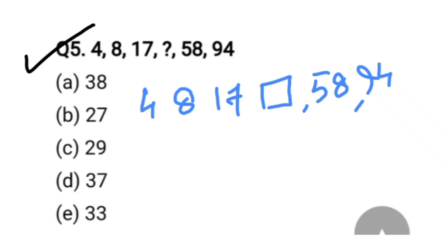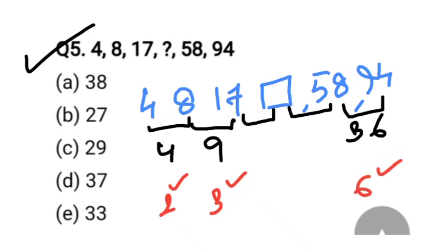Here 4, 8, 17, box, 58, 94. If we subtract from second term to the first term, then we will get here 8 minus 4 is 4, 17 minus 8 is equal to 9, and 94 minus 58 is equal to 36. Here from the differences, we will get 4 is 2 square, it will be 3 square. Like this, it will be 6 square. Before 6 square, that should be 5 square, and it will be 4 square.